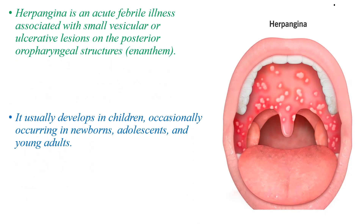Herpangina is an acute febrile illness associated with small vesicular or ulcerative lesions on the posterior oropharyngeal structures. It usually develops in children; occasionally it occurs in newborns, adolescents and young adults.